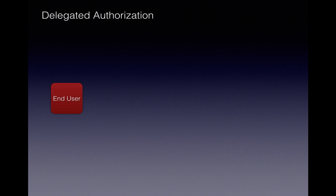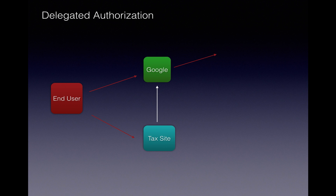Let's say you have used a website that allows you to file your income tax returns online, and at the end of it produces a bunch of tax return documents which it allows you to save to your Google Drive. You as an end user, instead of sharing your Google username and password with the tax website, are redirected — using OAuth, the tax website will redirect you to the Google login page.